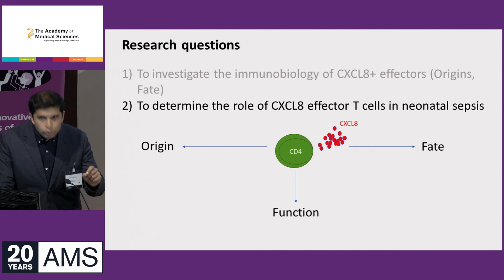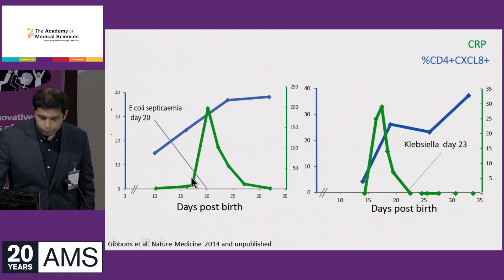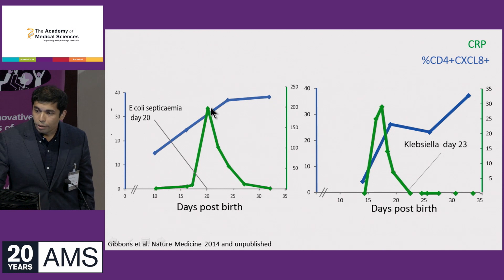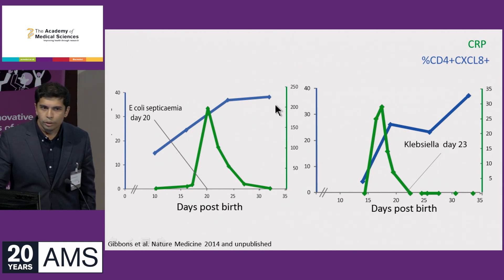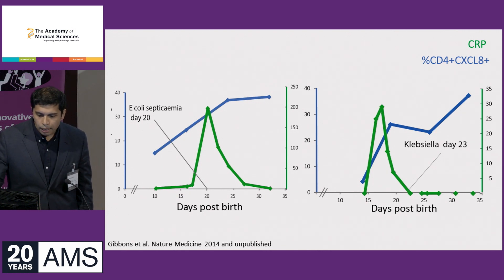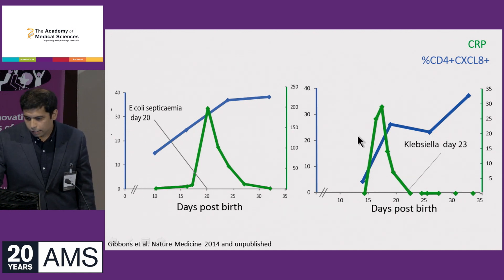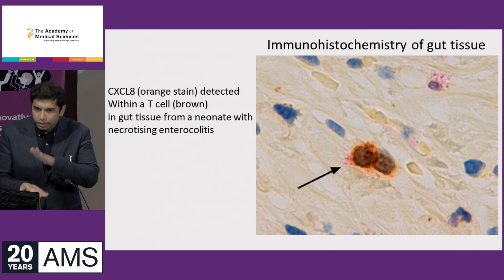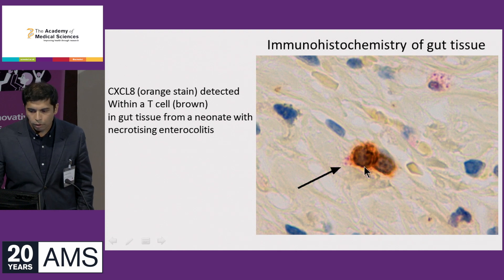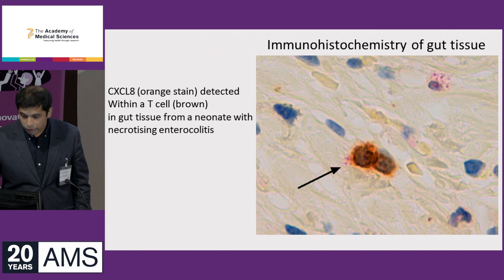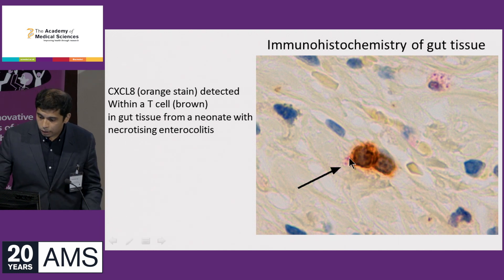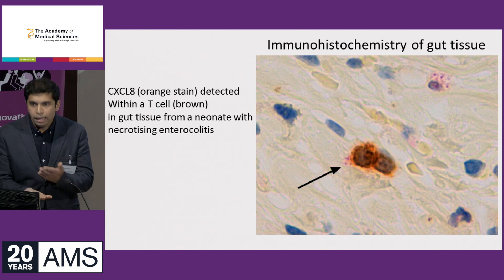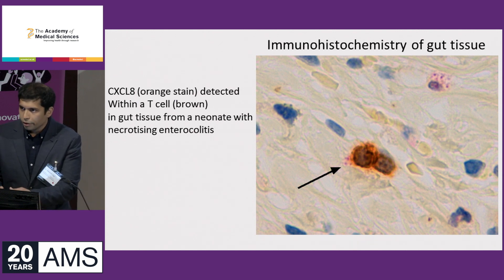Now I want to give you some preliminary data on potential roles in bacterial infection. We have access to blood samples from neonates on the intensive care unit, some of whom have culture-proven sepsis. Looking at the green line — CRP — in one neonate with E. coli bacteremia and one with Klebsiella bacteremia, you can see the undulations. The blue line shows CD4 T-cell CXCL8 production over time: CXCL8 fluctuates, and in some cases this mirrors the inflammatory changes. Additionally, in immunohistochemistry from a baby with necrotizing enterocolitis, within inflamed gut we can see a brown CD3 T-cell with orangey-red CXCL8 substance around it — pinpointing that T-cells are producing CXCL8 within inflamed tissue.